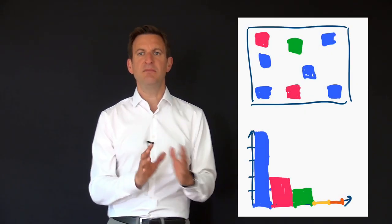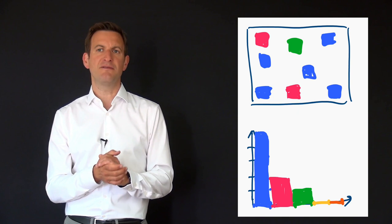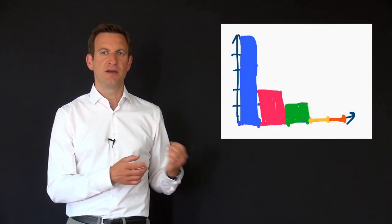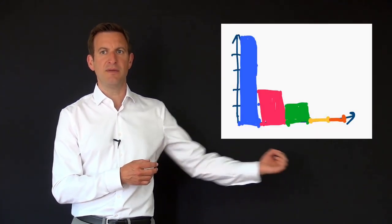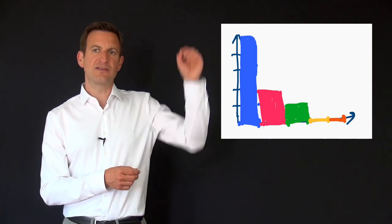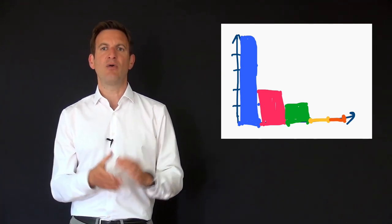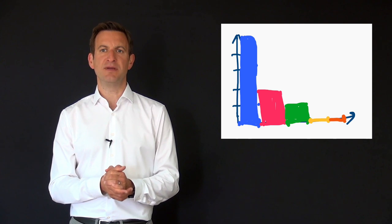So in bag of words, each image becomes a histogram simply counting the occurrences of the visual words within this image. The x-axis of the histogram defines the visual words while the y-axis of the histogram tells us how often the individual visual words appear in an image.